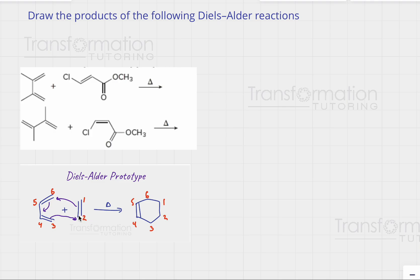The first arrow goes from the double bond between carbon 1 and 2 to create a new bond between carbon 1 and 6. We then move the double bond from 5-6 to 5 and 4, and then use the double bond between 3 and 4 to connect carbons 3 and 2 in a new bond, creating our cyclohexene.